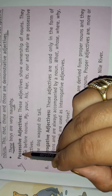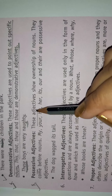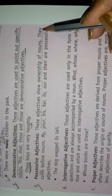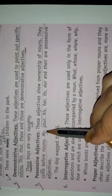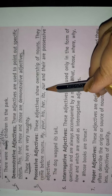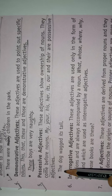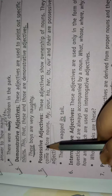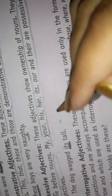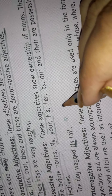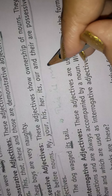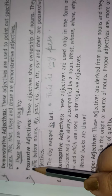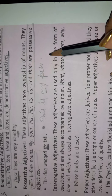Number five: Possessive Adjective. These adjectives show ownership of nouns and come before the noun. My, your, his, her, its, our, their are possessive adjectives. For example: 'The dog wagged its tail' — here 'its' is a possessive adjective. Another example: 'This is my pen' — 'my' is the possessive adjective.